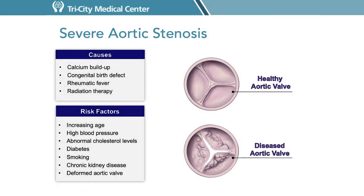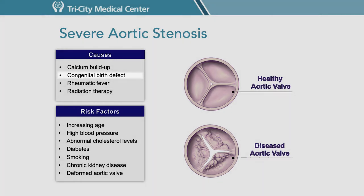There are other causes that can lead to aortic stenosis and accelerate the onset. A normal aortic valve has three leaflets, but rarely patients can be born with an aortic valve that has one, two, or four leaflets. This defect causes stenosis or regurgitation — which is leakiness — at an earlier age. Rheumatic fever is a complication of strep throat infection and is a rare cause of aortic stenosis in the United States. Scar tissue from the infection can lead to early aortic valve stenosis.